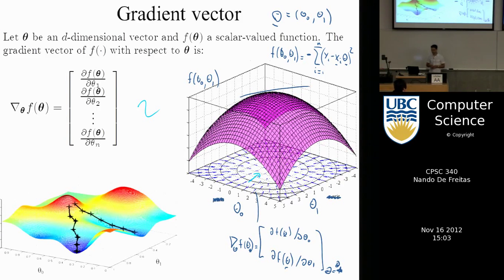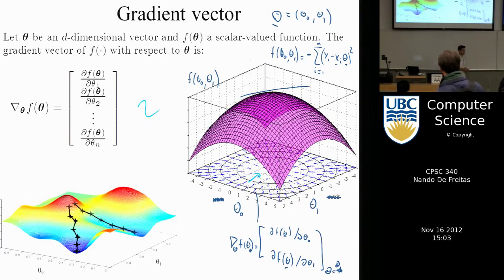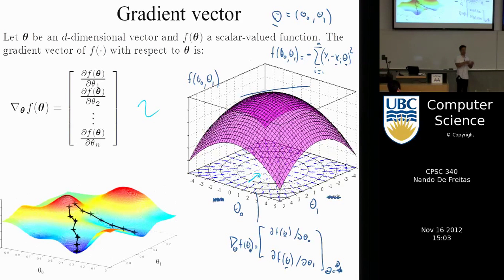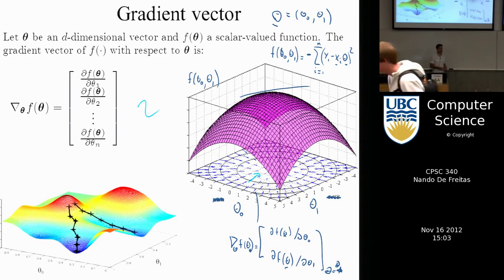The gradient is the vector of derivatives. Most functions we deal with have many free parameters, so we need to compute the derivative with respect to each parameter we want to learn, ending up with a vector of all the derivatives. You can skip vectors and matrices and treat each term one by one, but then your code will be very messy with many for loops. That's why it's important to always use abstraction and introduce matrices and vectors.